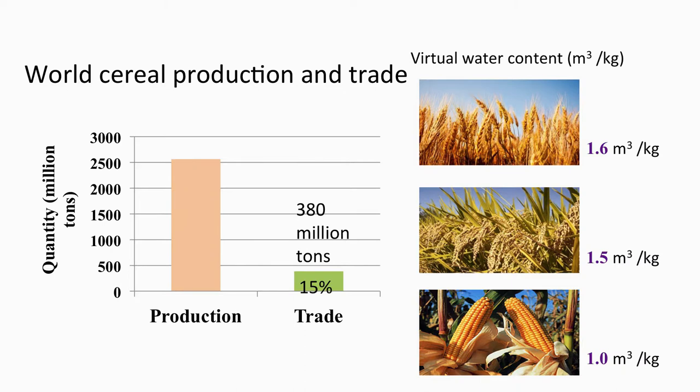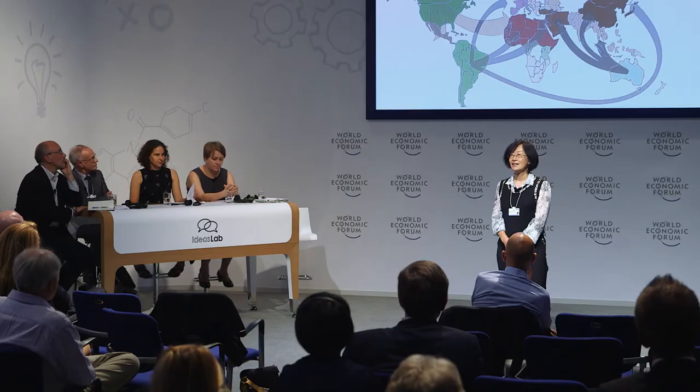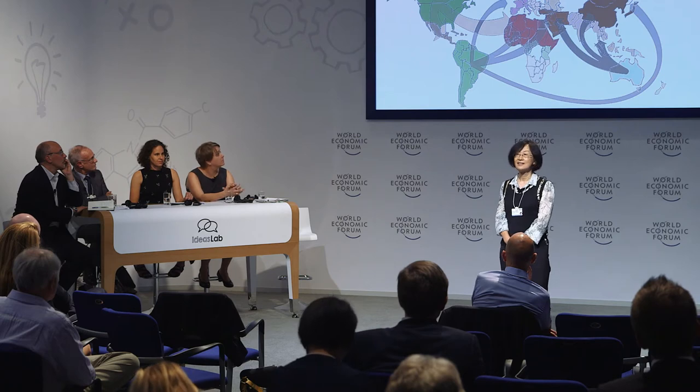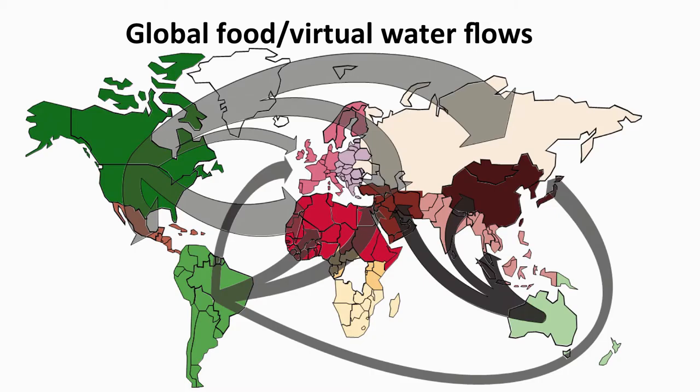At the moment, internationally traded food accounts for about 15% of total production, and international trade carries virtual water — the water used during production. North America, South America, and Oceania are the major food exporters and virtual water exporters, while Asia and Africa are the major importers.